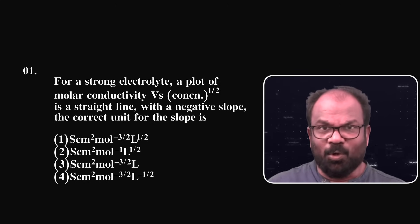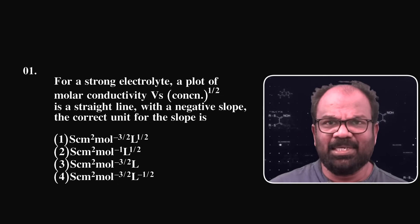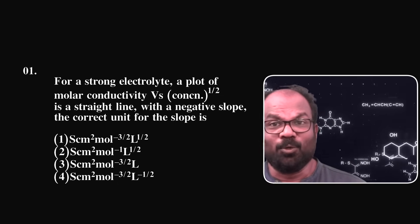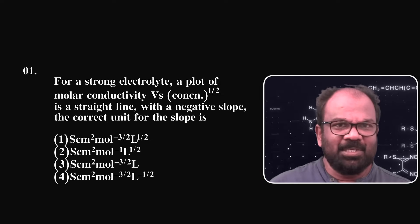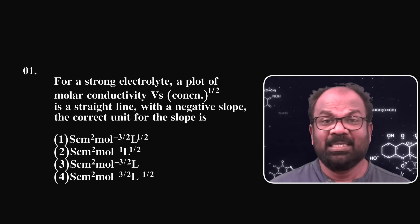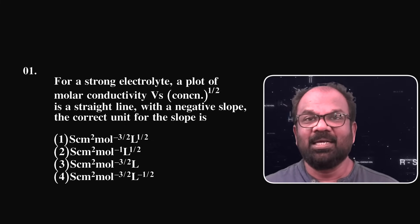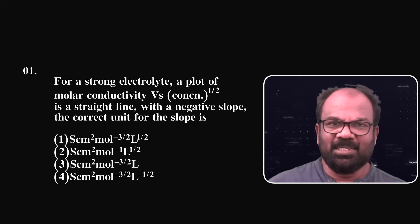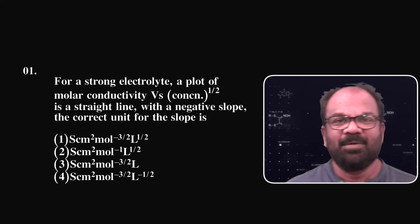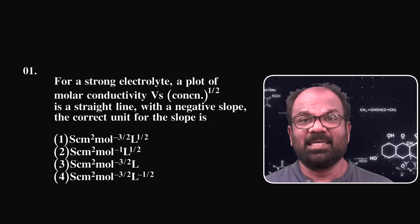Question number 1: For a strong electrolyte, a plot of molar conductivity against concentration raised to half is a straight line with a negative slope. The correct unit for the slope is: option 1 - siemen centimeter square mole raised to minus 3/2 liter raised to 1/2; option 2 - siemen centimeter square mole raised to minus 1 liter raised to 1/2; option 3 - siemen centimeter square mole raised to minus 3/2 liter; option 4 - siemen centimeter square mole raised to minus 3/2 liter raised to minus 1/2.